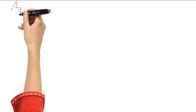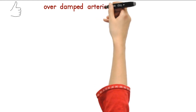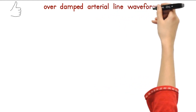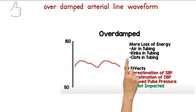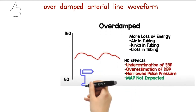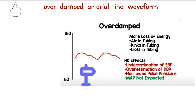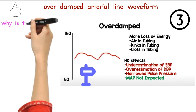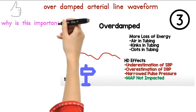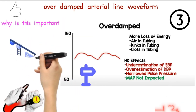When you have an over-damped arterial line waveform, this is what it's going to look like — it's going to look super small. It's because there's something in the line that's causing more loss of energy. This could be things like air bubbles in the tubing, kinks in the tubing, or little clots in the tubing. All three of these things will damp or reduce the waveform. This is important because of the hemodynamic effects — it's going to underestimate your systolic blood pressure.